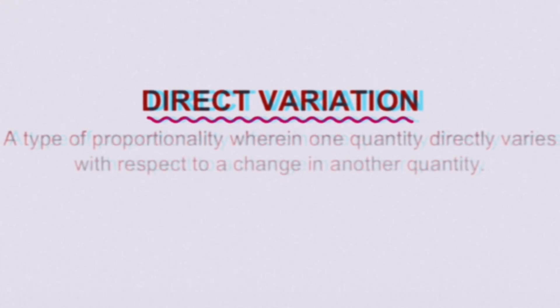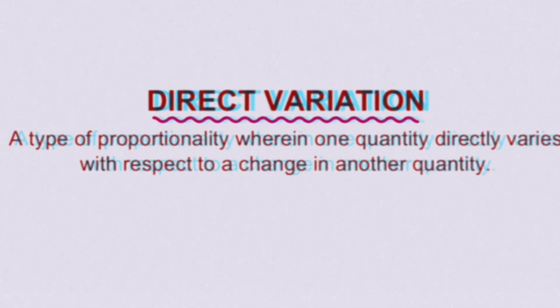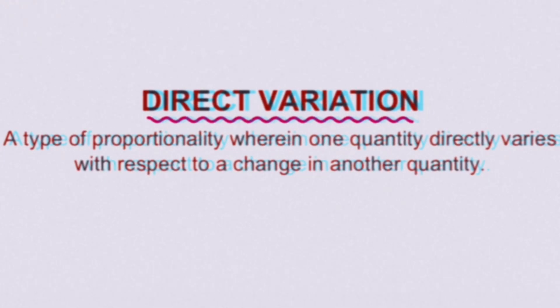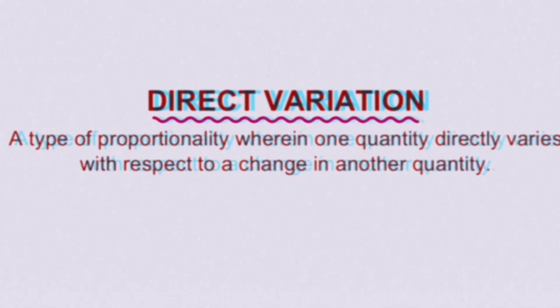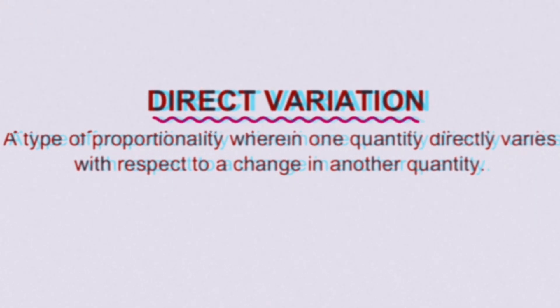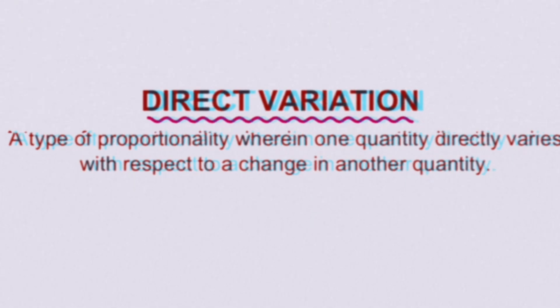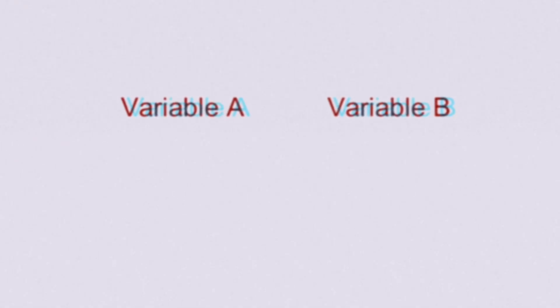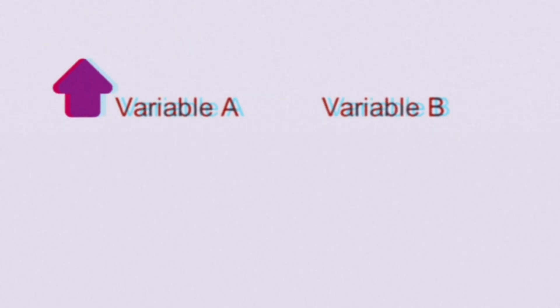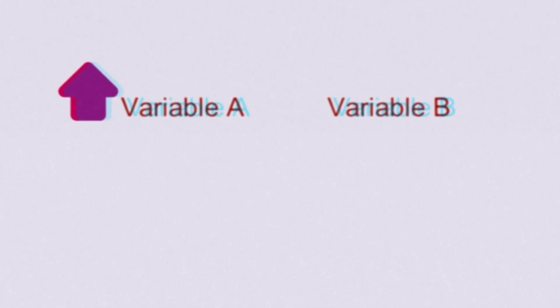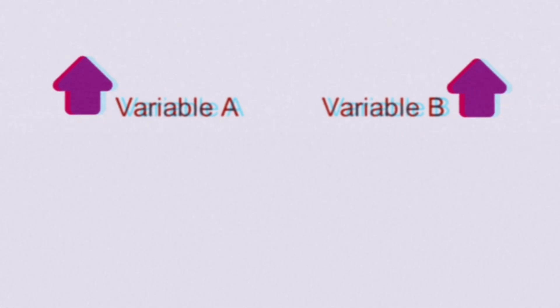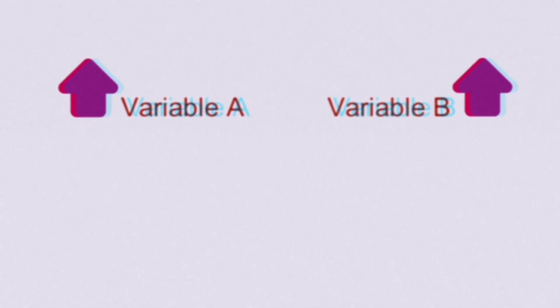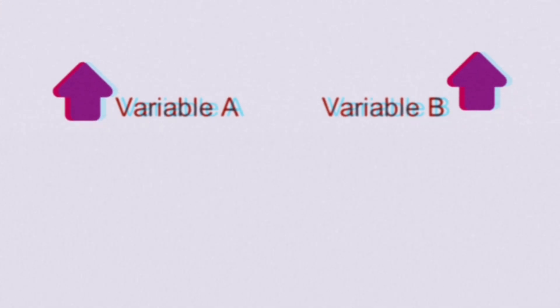By definition, direct variation is a type of proportionality wherein one quantity directly varies with respect to a change in another quantity. To better understand this, let's look at variable A and variable B. For a direct variation, if variable A increases, variable B will also increase. Please notice the direction of the arrow — both of them are increasing.